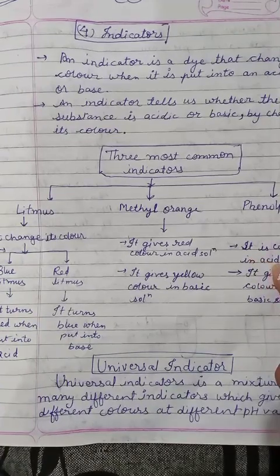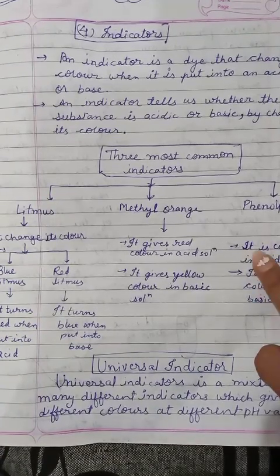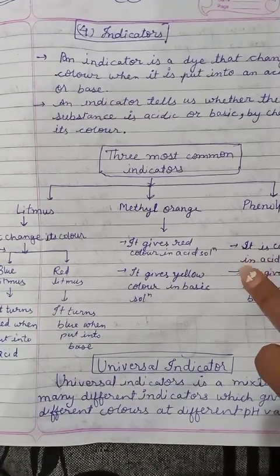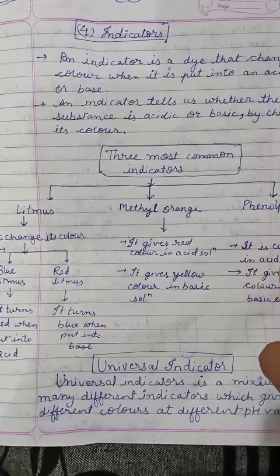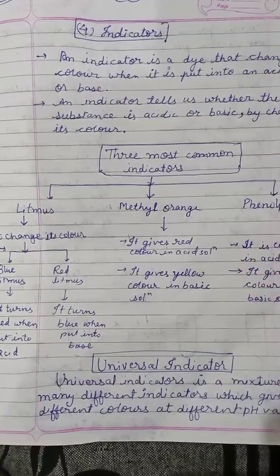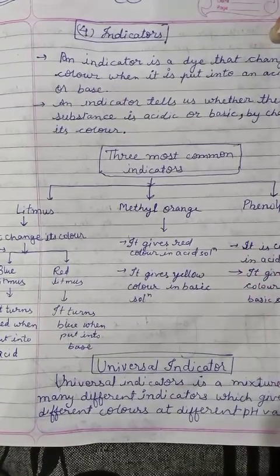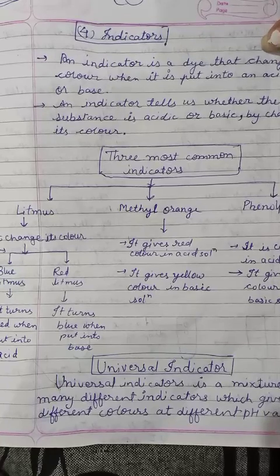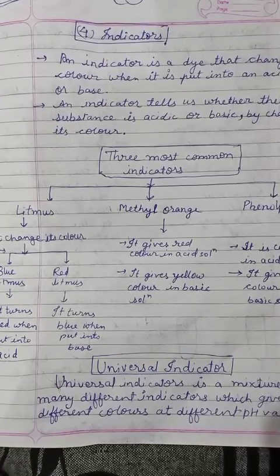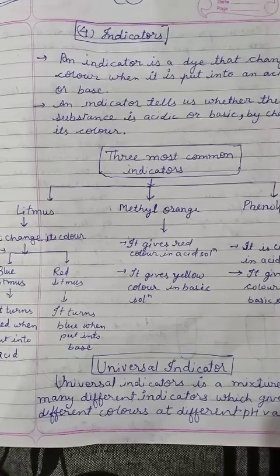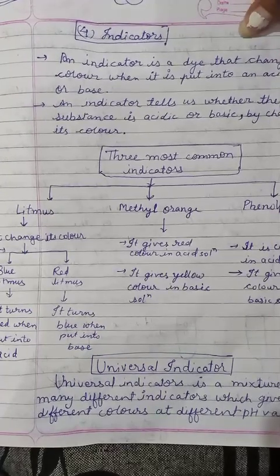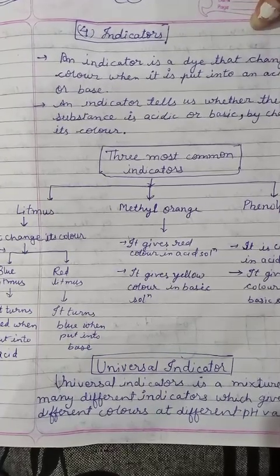When we add phenolphthalein in acid, it will remain colorless — so it is colorless in acidic solution. And it gives pink color in basic solution. If we add phenolphthalein in basic solution, it will become pink.